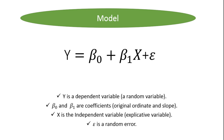Coming back to the model specification: we have a dependent variable, which is supposed to be a random variable, expressed as a function of the independent variable. The challenge is to compute beta zero and beta one such that the error term — the error committed by supposing that our points in the scatter belong to the line — is minimum. We need to minimize the sum of squared errors in the least squares method.